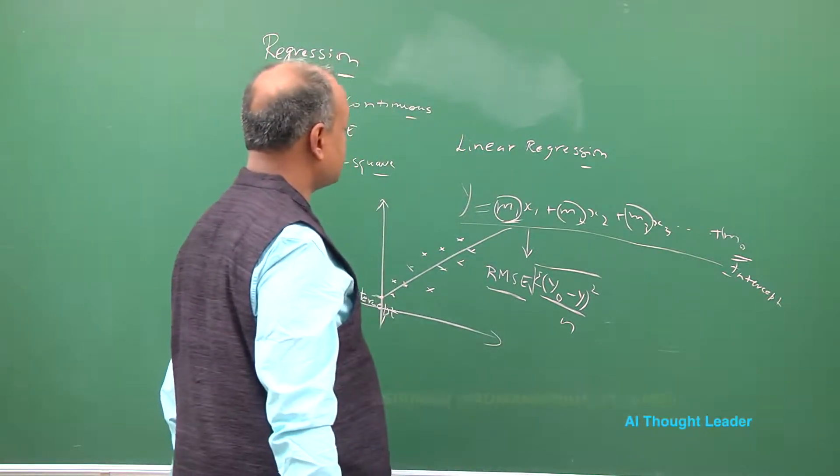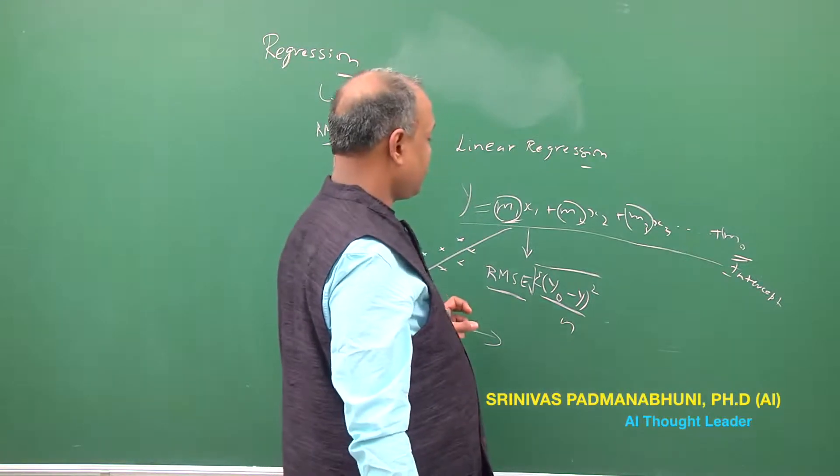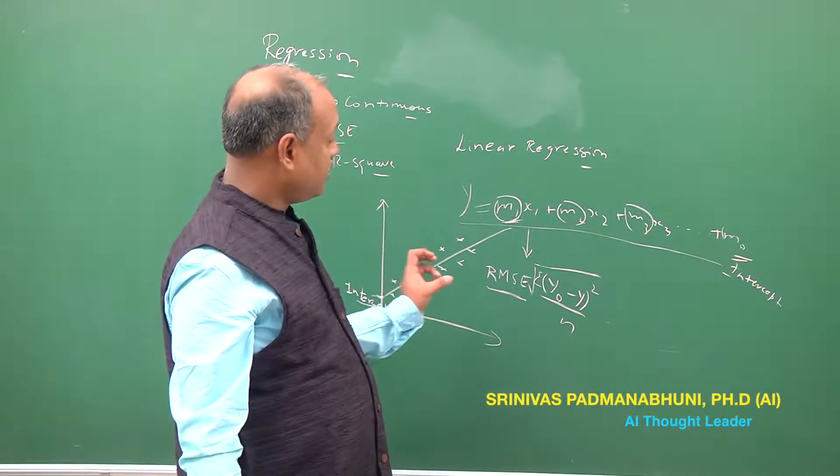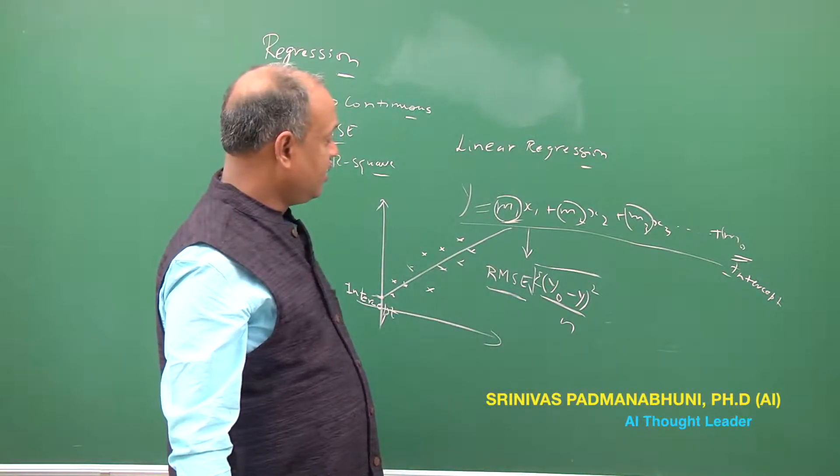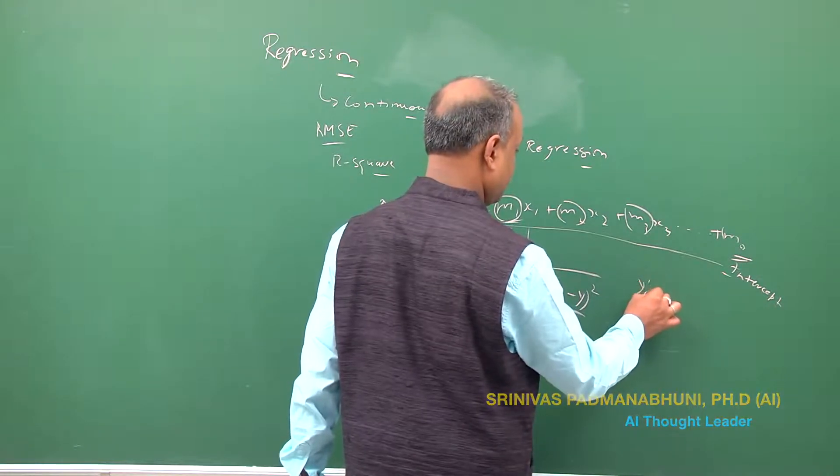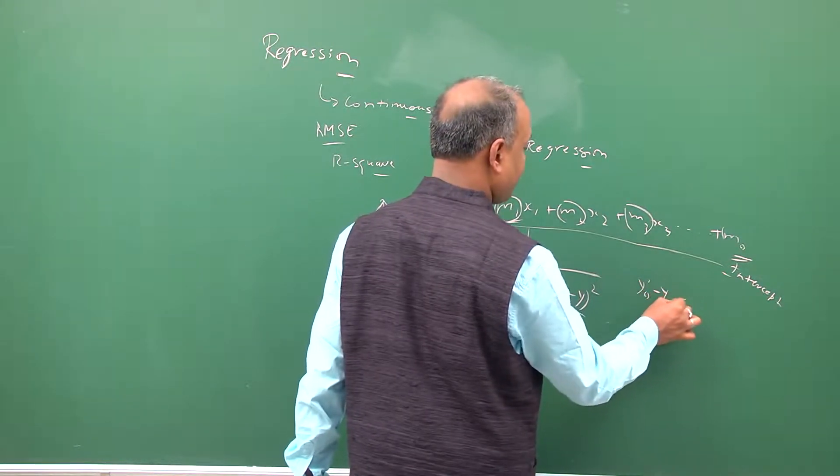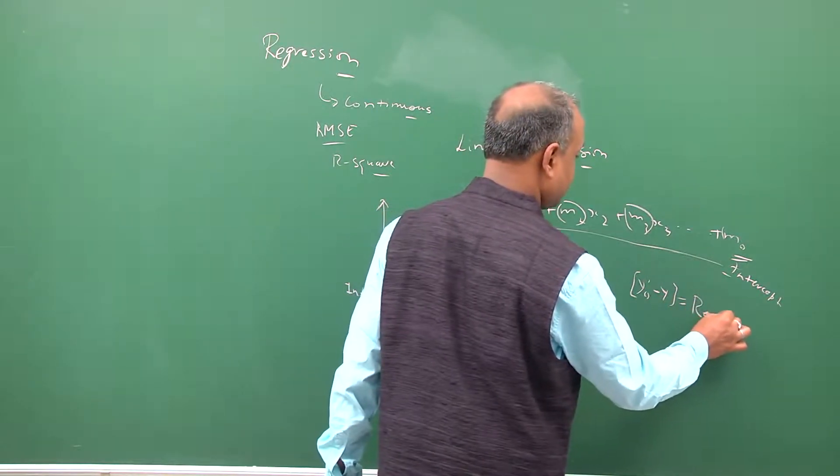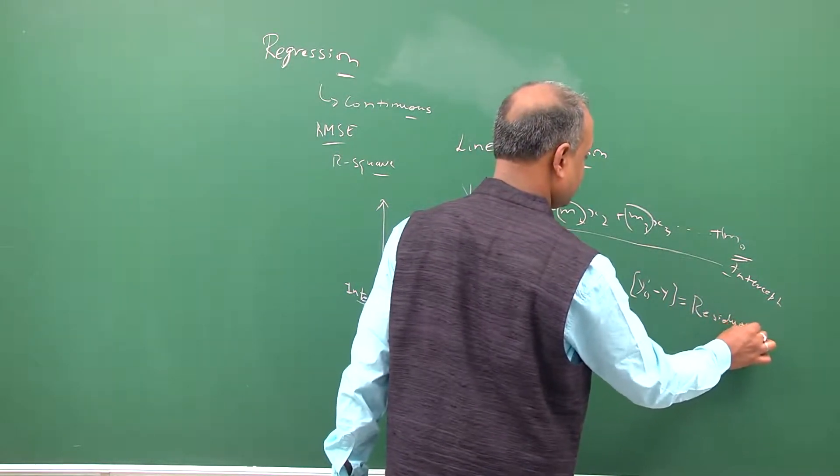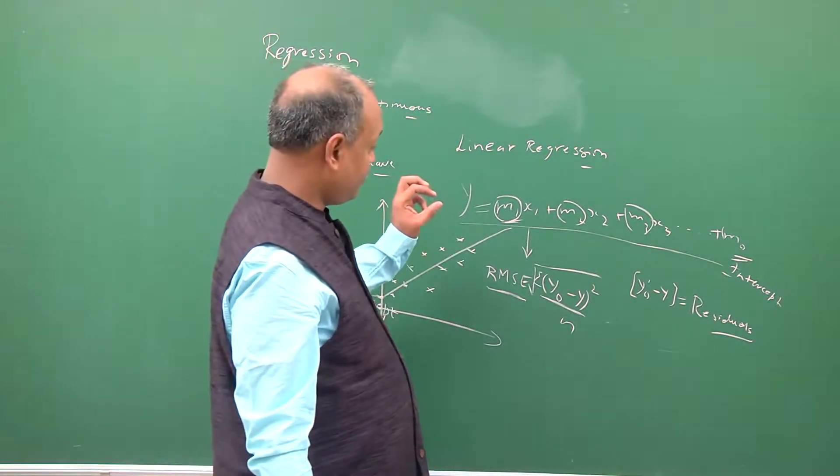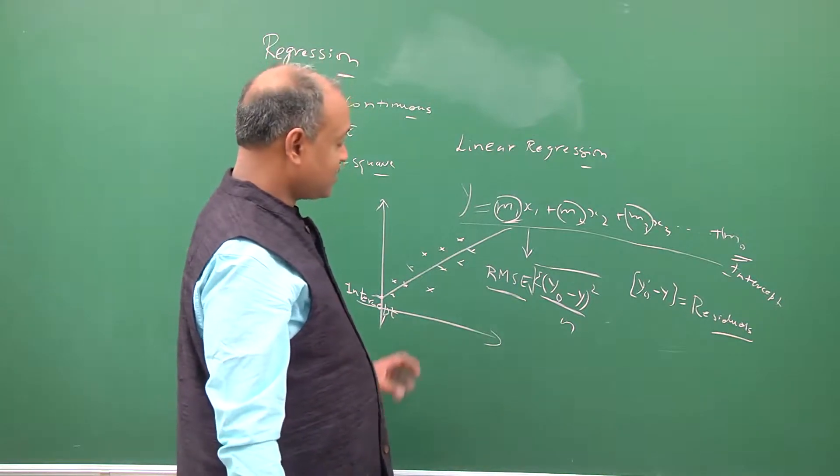Another approach is to look at, instead of actual mean square error, you can also look at individually what is the gap between projected. This is called the residuals. Residuals are nothing but the gap, exact gap between the projected point and the actual point.